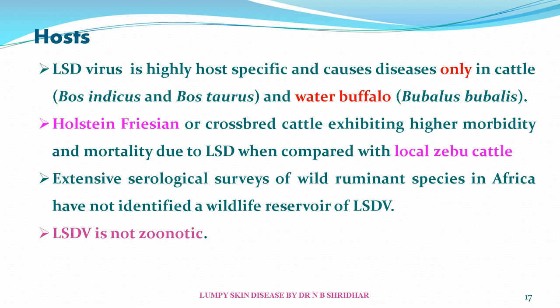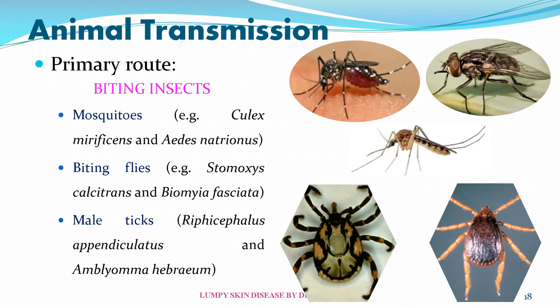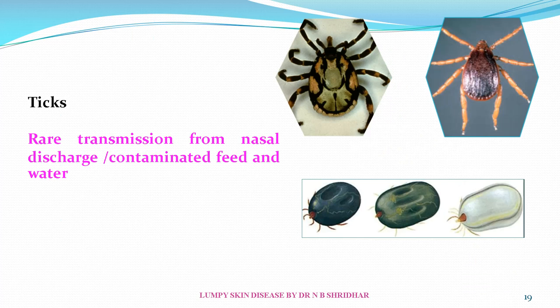Very importantly, LSD virus is not zoonotic. Animal transmission usually happens by biting insects like mosquitoes (Culex, Aedes), biting flies like Stomoxys, and male ticks like Rhipicephalus and Amblyomma. Rare transmission can also occur through nasal discharge, contaminated feed, and water. The virus is not transmitted by direct contact except through these vectors — mosquitoes, ticks, and flies.